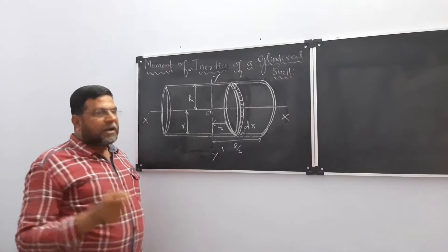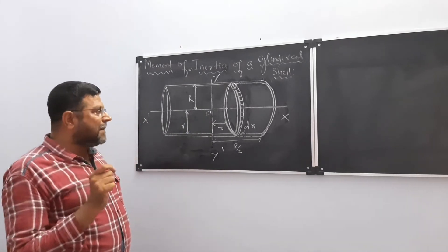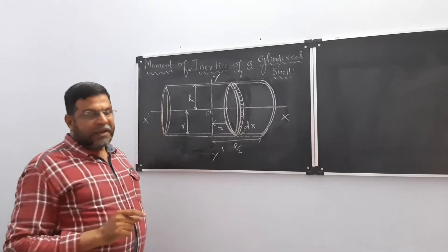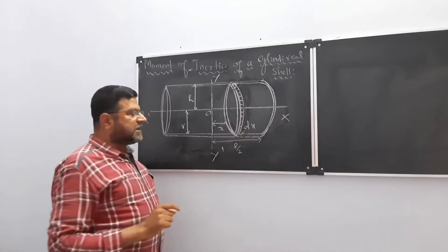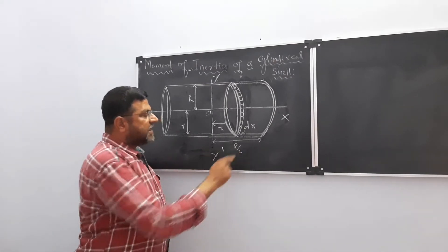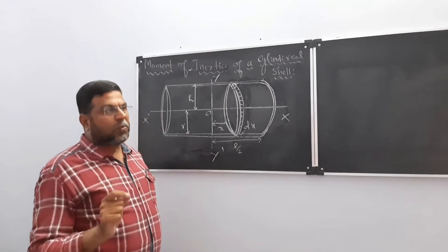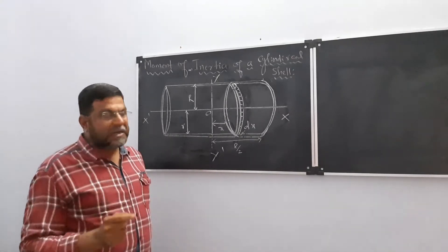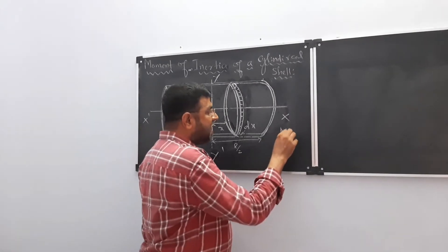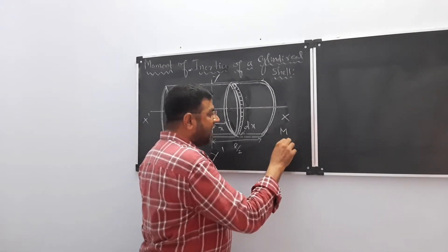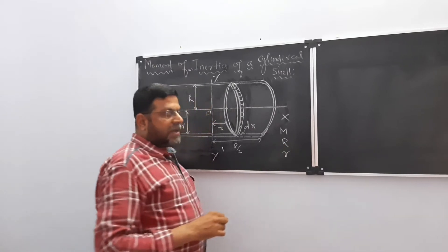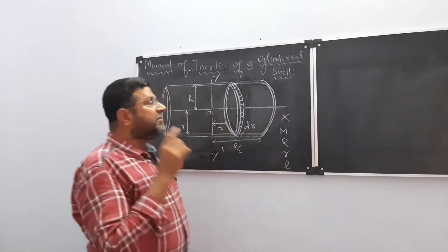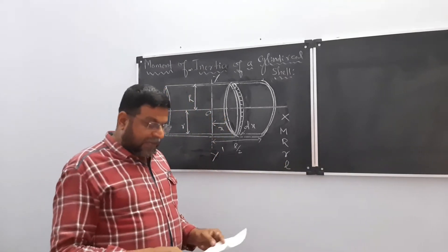I am going to consider a small element at a distance x of thickness dx. The whole length of this cylindrical shell is L, so from the center it is L/2. You have to mention four things: length, mass, inner radius, and outer radius. Let M be the mass of the cylindrical shell, R be the outer radius, small r be the inner radius, and L be the length of the cylindrical shell.